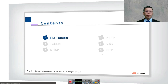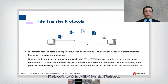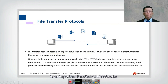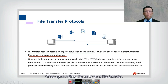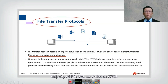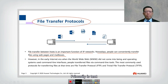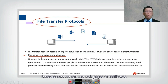Let's start with chapter one: file transfer protocol. File transfer between hosts is an important function of IP networks. Nowadays people can conveniently transfer files using web pages and mailboxes. Once upon a time, file transfer used FTP, which was primarily text — ASCII — during the mainframe era. But nowadays we have many options beyond just FTP.